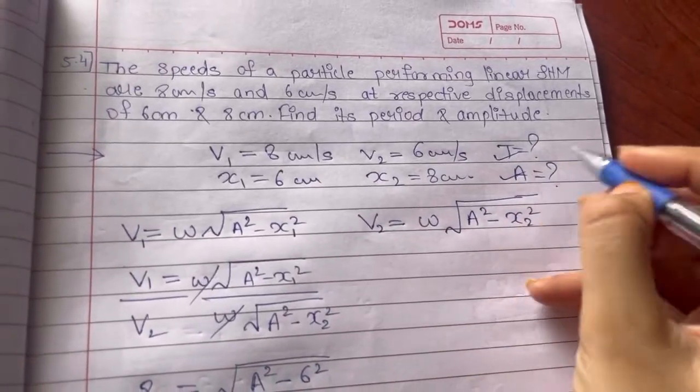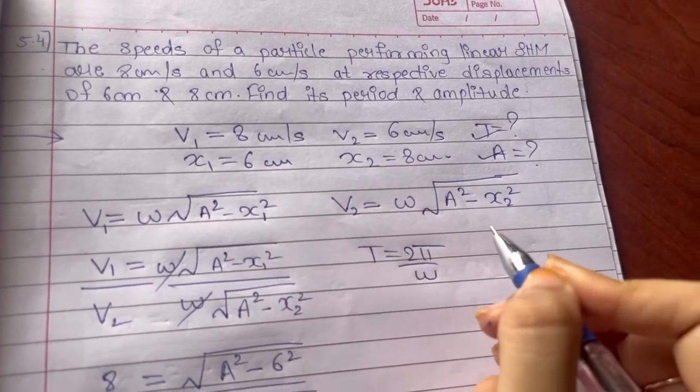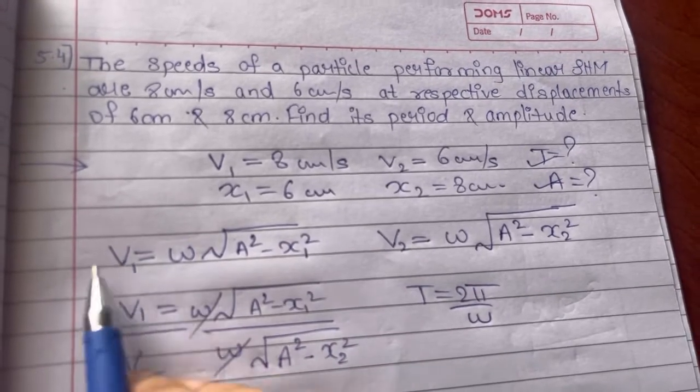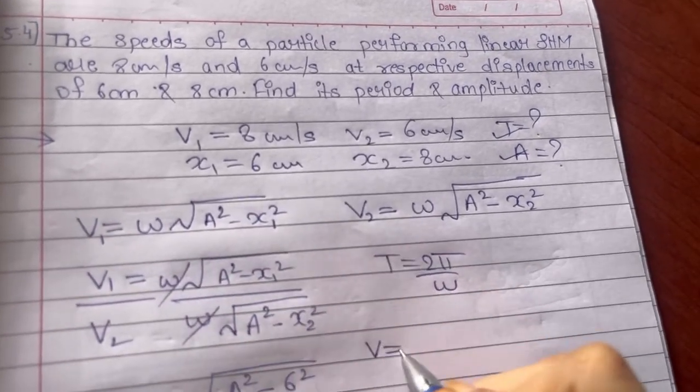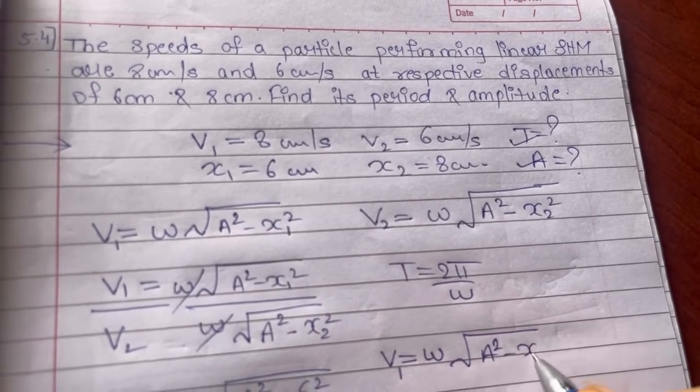So T is equal to 2 pi upon omega. We don't have omega, but if you see in the value or in the formula of velocity, we have omega. So we will write that V1 is equal to omega root A square minus x1 square.